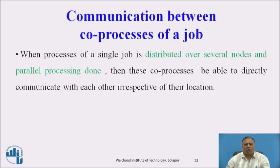Communication Between Co-processes of a Job: When a process of a single job is distributed over several nodes and parallel processing is done, the co-processes are able to directly communicate with each other irrespective of their location. This communication between different co-processes helps in performing different tasks. In process migration, we have to take into account this communication between co-processes of a job.